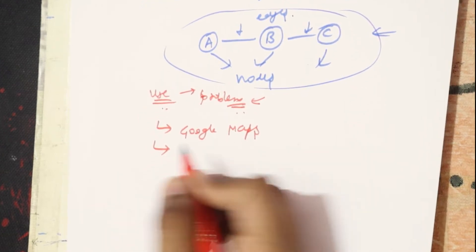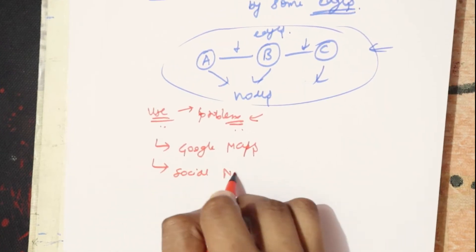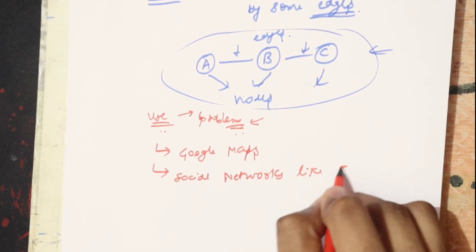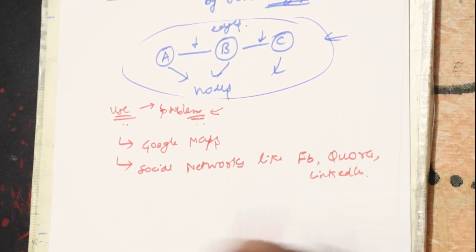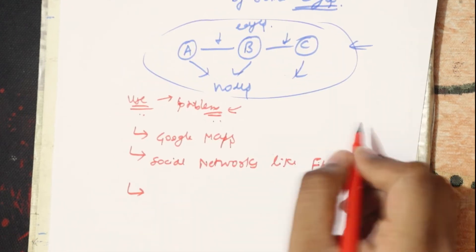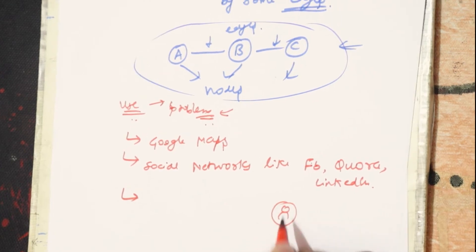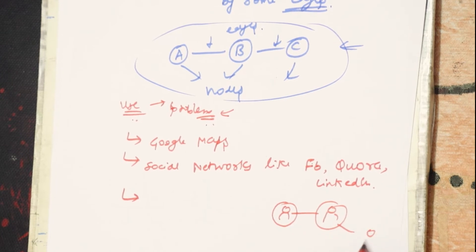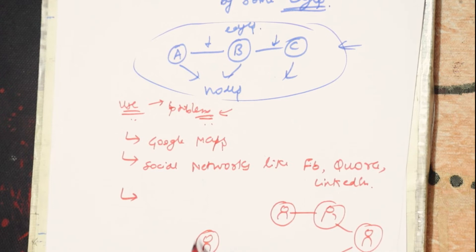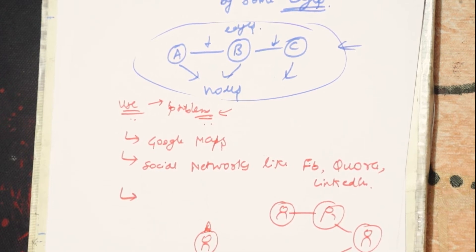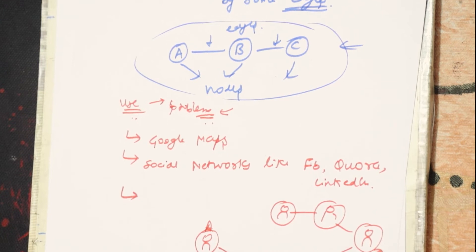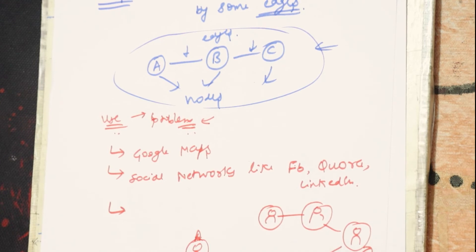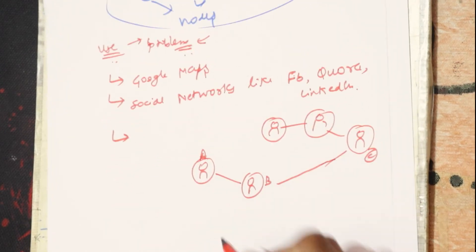Social networks like Facebook, Quora, and LinkedIn are also possible because of graphs. Just see - I have a person who knows another person who knows another person. Suppose person A knows person B, and B knows C. It might happen that C is also a friend of A, so C will show in A's friend list as someone they might know.